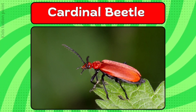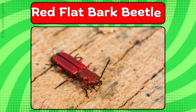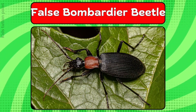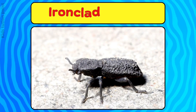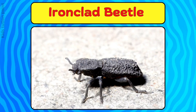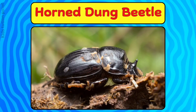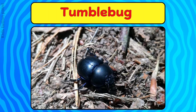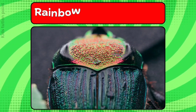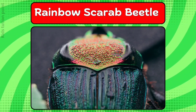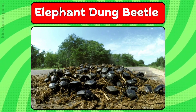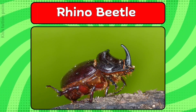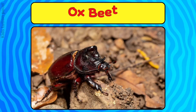Cardinal beetle. Red flat bark beetle. False bombardier beetle. Iron-clad beetle. Horned dung beetle. Tumblebug. Rainbow scarab beetle. Elephant dung beetle. Rhino beetle. Ox beetle.